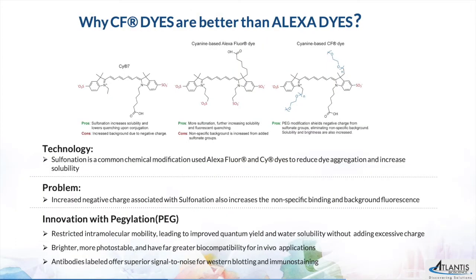CF dyes are the result of breakthrough chemical engineering that focuses on improving performance while resolving long-standing limitations of existing fluorescent dyes. For instance, sulfonation is a common chemical modification used in well-known dyes such as Alexa Fluor to reduce dye aggregation and to improve solubility. However, the increased negative charge associated with this modification also leads to non-specific binding and background fluorescence.